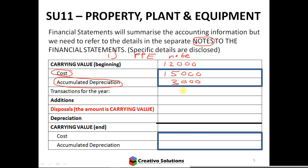For example, if I had a carrying value of 12,000 here, that 12,000 would be made up of cost — say 15,000 — and accumulated depreciation of 3,000. During the year, different things can take place: I can have additions meaning I've bought more equipment, and I can have disposals where I've sold something, which needs to be at carrying value.